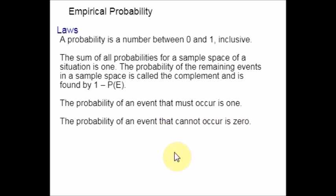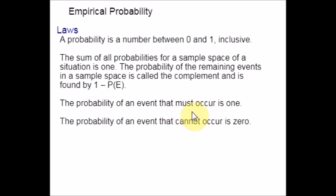In situations where theoretical probability cannot be calculated, you can determine the answer using empirical probability experimentally. Wherever you cannot apply theoretical probability, you can easily apply empirical probability. When it comes to accuracy, the accuracy of empirical probability depends on the number of trials. The Law of Large Numbers says that the more times an experiment is performed, the more accurately the probability can be used as a predictor. Less trials give less accurate answers; more trials bring your answer much closer to the accurate result.